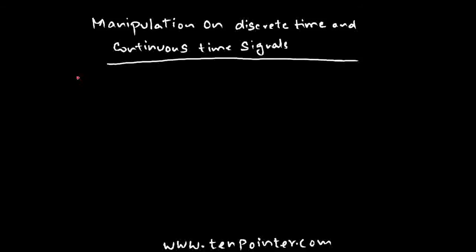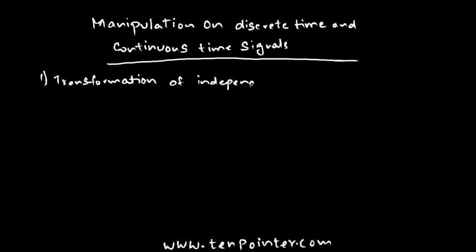Let us look at some techniques of manipulating discrete time and continuous time signals. The first technique is transformation of the independent variable — that is, time. For continuous time signals, we represent it as t, and for discrete time signals, the same time is represented as n.